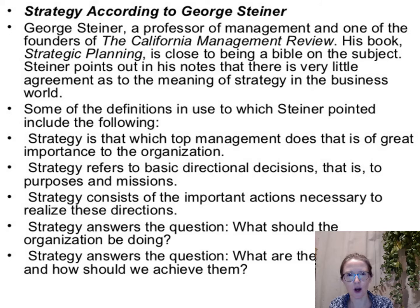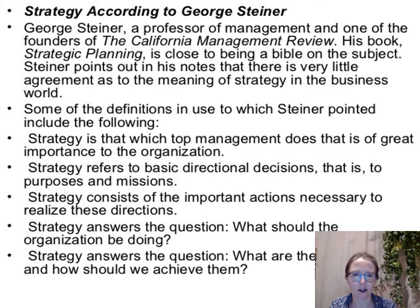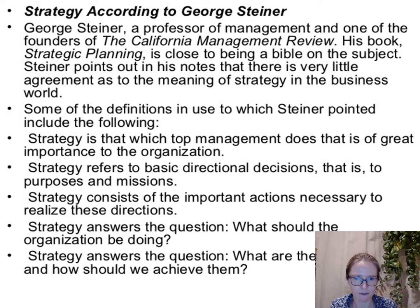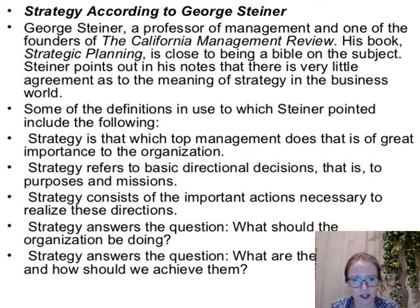According to George Steiner, a professor of management and one of the founders of the California Management Review, his book Strategic Planning is close to being a Bible on the subject. Steiner points out that there is very little agreement as to the meaning of strategy in the business world. Some definitions include: strategy is that which top management does that is of great importance to the organisation; strategy refers to basic directional decisions, that is to purposes and missions; strategy consists of the important actions necessary to realise these directions; and strategy answers the questions 'what should the organisation be doing?' and 'what are the ends we seek and how should we seek them?'